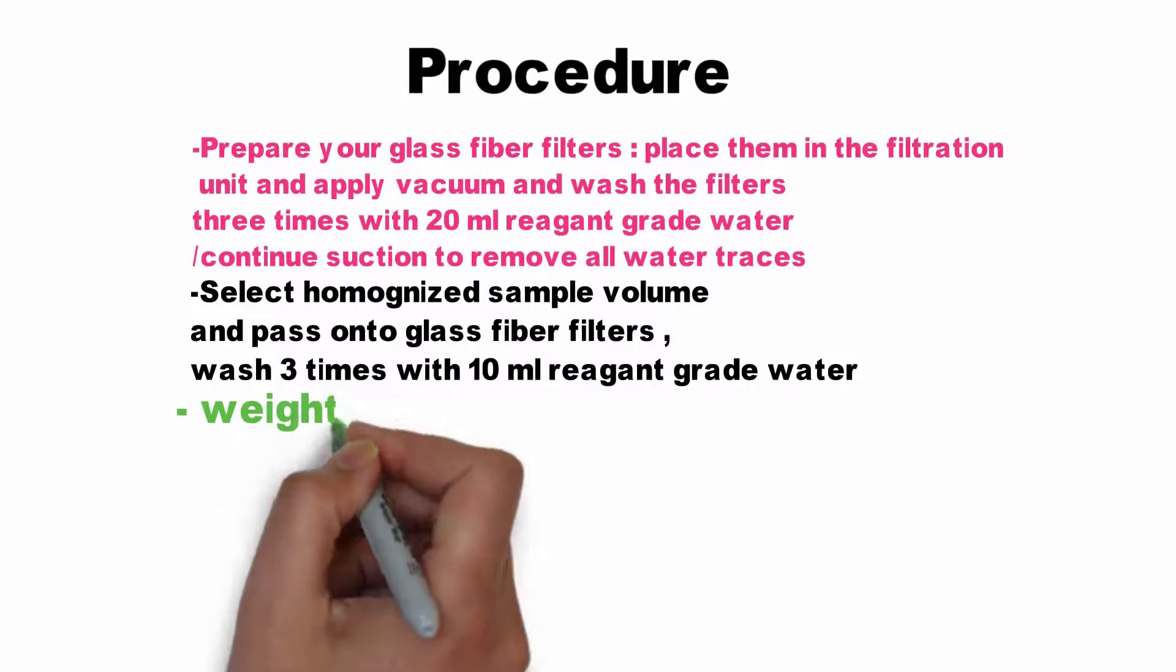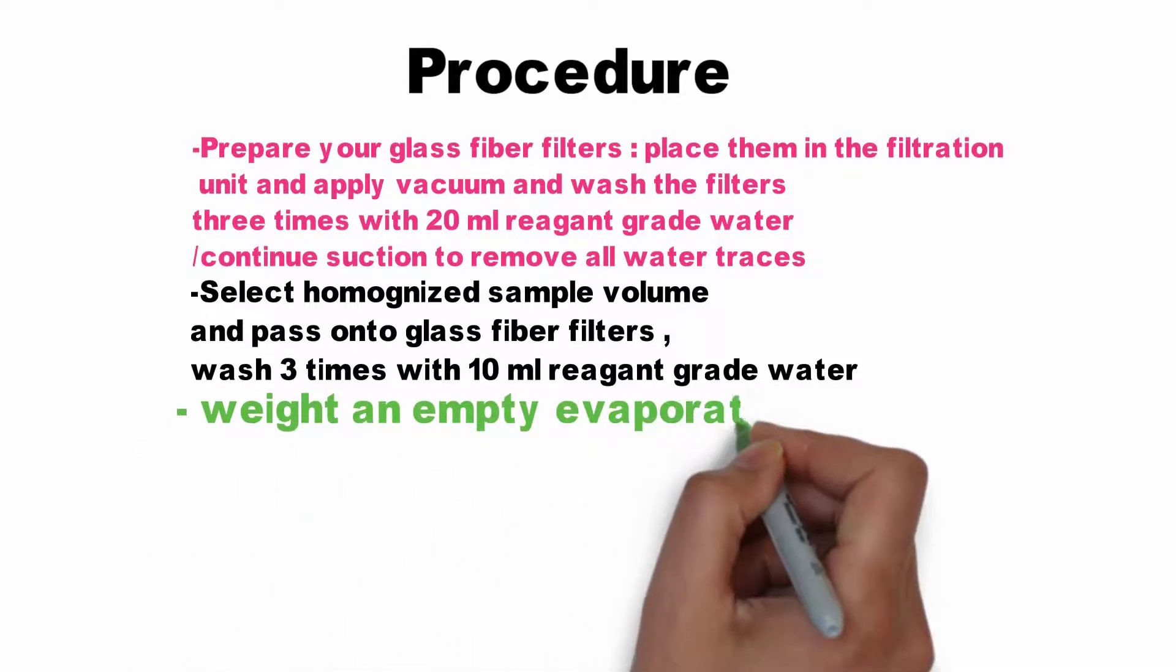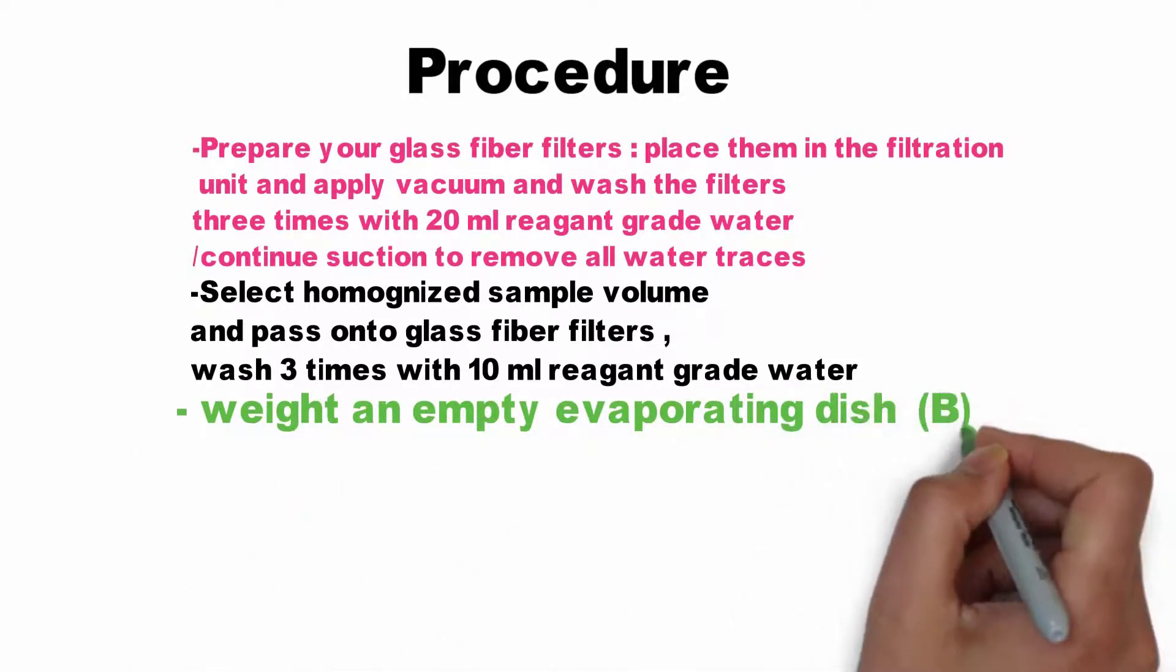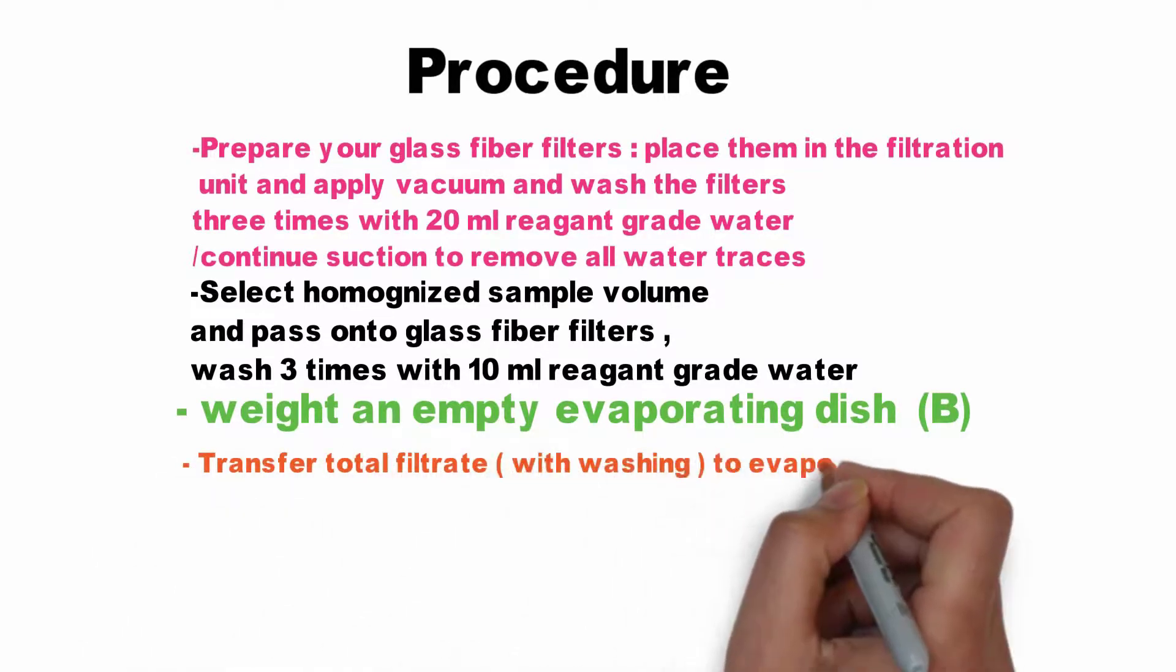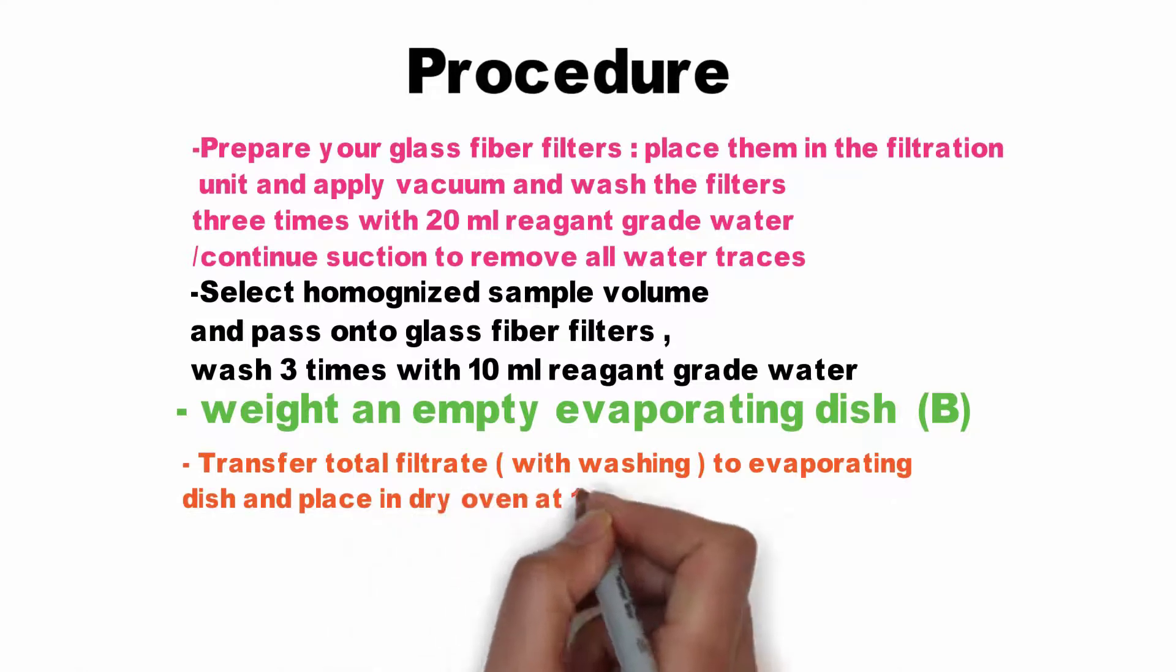Take the initial weight of an empty evaporating dish. Then transfer the total filtrate with the washing to the evaporating dish and place it in a dry oven at 180 degrees for one hour.